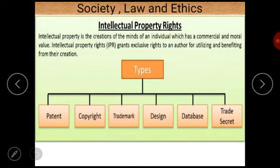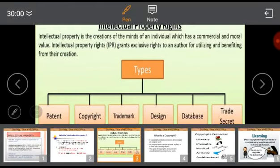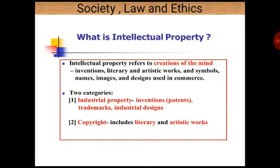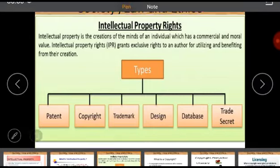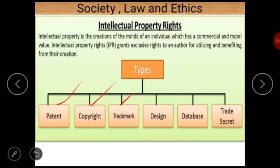There are some types of intellectual properties: patent, copyright, trademark — all of these terms are very well known — and some others are design, database, and trade secrets. In this lecture we are only going to discuss the three important terms: patent, copyright, and trademarks. It may be asked in examination: what is the difference between patent, copyright, and trademark, or what is patent, or what is copyright, or what is trademark.